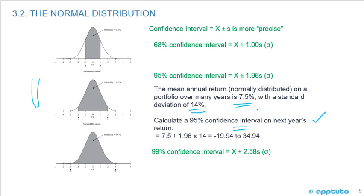...calculate the 95% confidence interval on next year's return. So we can say next year, based on the past returns of an average return of 7.5% and a standard deviation of 14%, we can be 95% confident that the return will fall between negative 19.94% and 34.94%. And how did we do that?